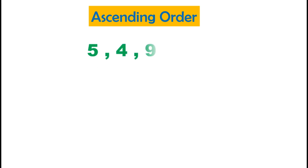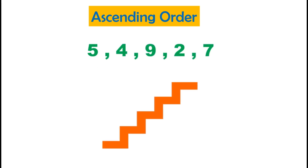Let's arrange 5, 4, 9, 2, and 7 in ascending order. As we have learned, ascending order means arranging numbers from small to big, so here we have to find out the smallest number amongst the given numbers. The smallest number is 2 — let's circle it.